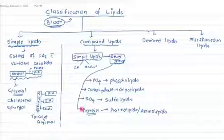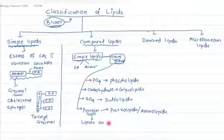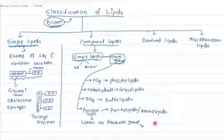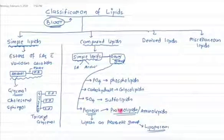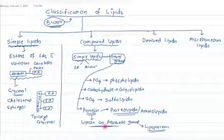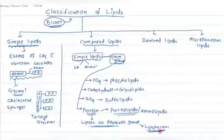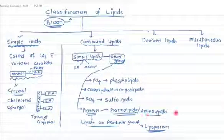If in a certain protein the lipid is acting as a prosthetic group, then that compound is given a different name — lipoproteins. Both proteolipids and lipoproteins are compound lipids, but in proteolipids it is a simple combination of protein and lipid, whereas in lipoproteins the lipid has a major role as a prosthetic group to the protein. Proteolipids are also known as amino lipids.